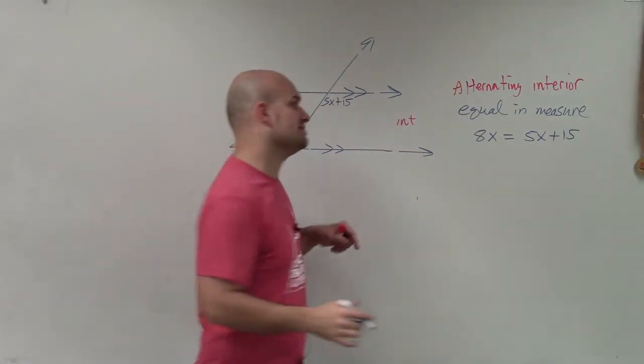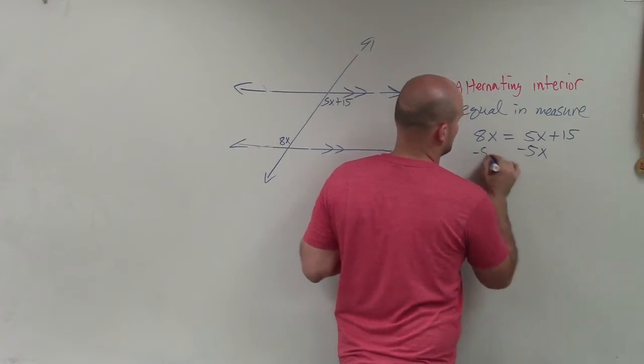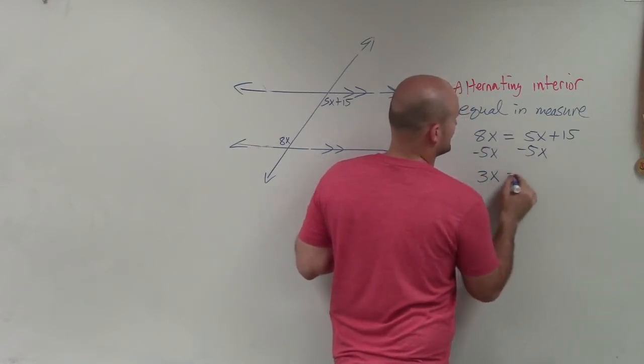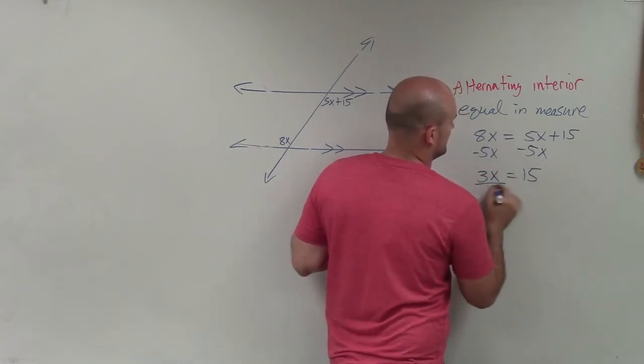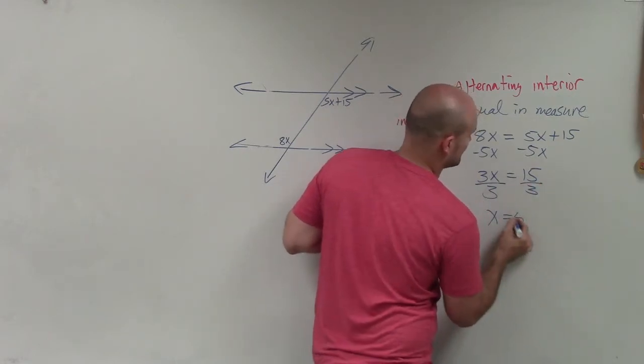Now, all I simply need to do is go ahead and solve. So I'll subtract 5x. And I have 3x equals 15. Divide by 3. Divide by 3. x equals 5.